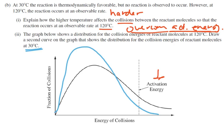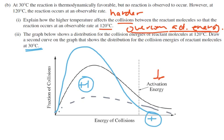One point comes from having the graph higher on the left side of the activation energy, and another point from showing it's lower on the right side. A lot of students just drew it shorter, thinking of it as a vertical graph. They did get one point — the one on the right — but not the one on the left. You want the curve squished to the left.